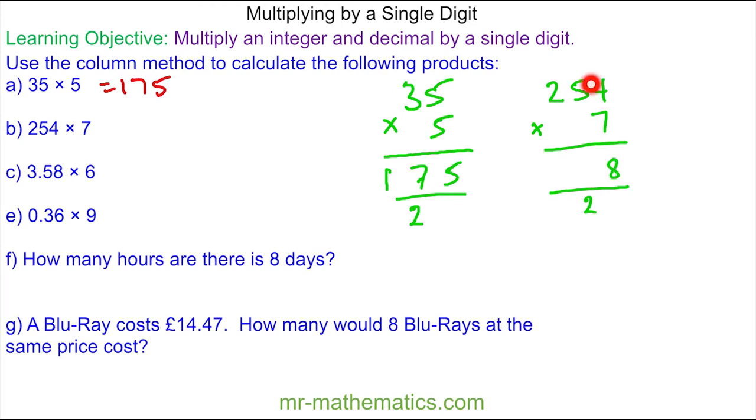Now we can do 5 times 7 which is 35. We'll add on the 2, so that's 37. 3 hundreds, 7 tens.